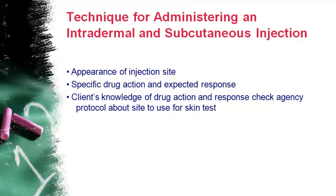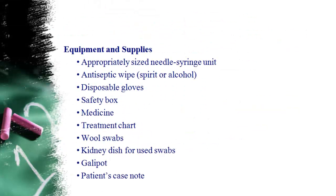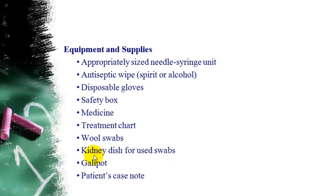Explain to the patient where they will be injected and why. Equipment required: appropriate size needle and syringe, antiseptic wipe with alcohol, disposable gloves, safety box, medicine, treatment chart, wool swab, kidney dish for used swabs, and patient case notes or file.